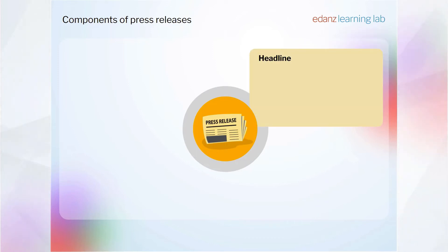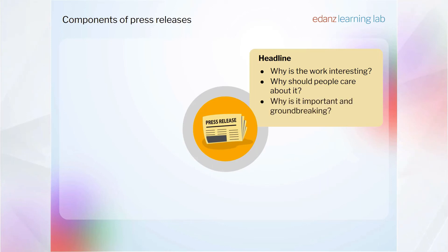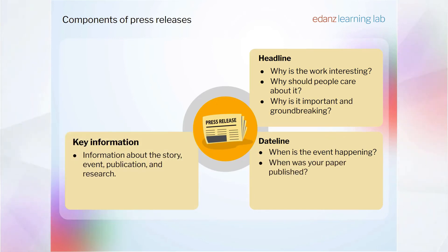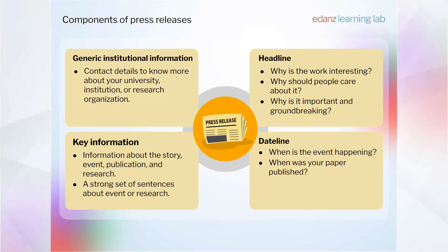These documents contain four components. When you put a press release together you're going to include a headline — an eye-catching, attention-grabbing story about your research: why is the work interesting, why should people care about it, why is it important and groundbreaking? A dateline to tell the media when the event is happening or when your paper was published. Then some key information about the story — the information about the event, the publication, or the research — a strong set of sentences that gives the media what they need to know. Then you finish the document with some generic institutional information and contact details so that people can contact you if they want to know more about your university, institution, or research organization.